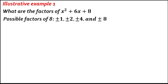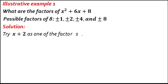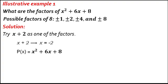Try x plus 2 as one of the factors, so x is equal to negative 2. Using the Remainder Theorem, p of x equals x squared plus 6x plus 8. Replace x with negative 2.